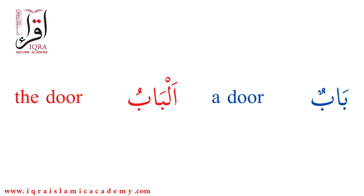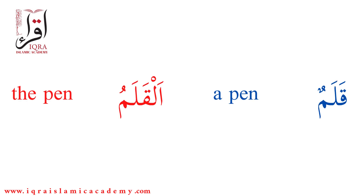In the next page we can see: kalamun — 'a pen' — it has the indefinite article tanwin. And al-kalamu — 'the pen' — which has the definite article al at the beginning, and the tanwin used in the indefinite form is removed and replaced by damma.